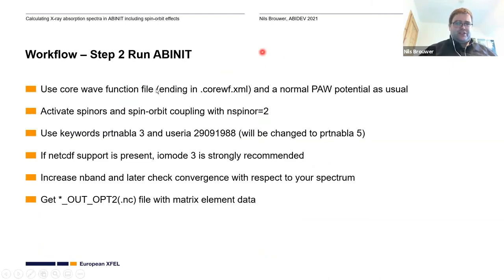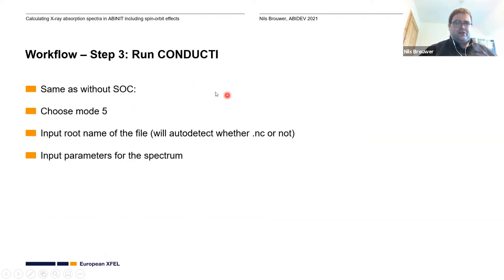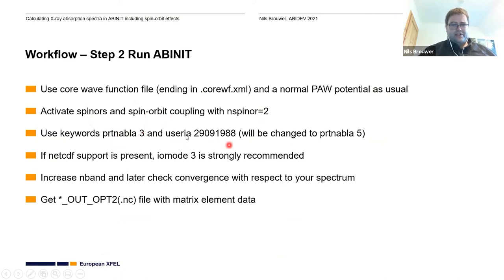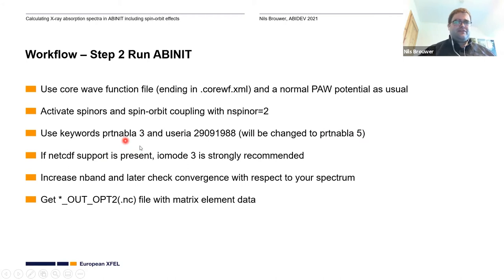The second step is, of course, to run ABINIT. You need this core wave function file, which ends in .corewf.xml, and your normal PAW potential as usual. It should have the same name and be in the same directory as the PAW potential. You need to activate the spinors with nspinor=2. At the moment it's still set to prtnabla=3, but you definitely need to change it to prtnabla=5 to activate the actual spinor matrix element calculation. If you have NetCDF support enabled — which should now be standard — you definitely should also use iomode=3, because that allows for much more stable output files, as those can get quite large and the Fortran ones tend to make problems.